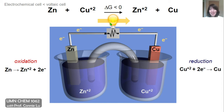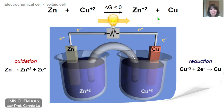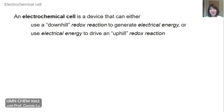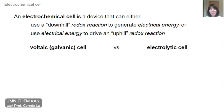If we insert a little light bulb in this wire, we can actually see it turn on, being powered by the electrical energy generated through this redox reaction. An electrochemical cell is a device that can either use a downhill redox reaction to generate electrical energy, or use electrical energy input to drive an uphill redox reaction. There are two kinds of electrochemical cells: the voltaic cell, sometimes also called the galvanic cell, and the electrolytic cell.